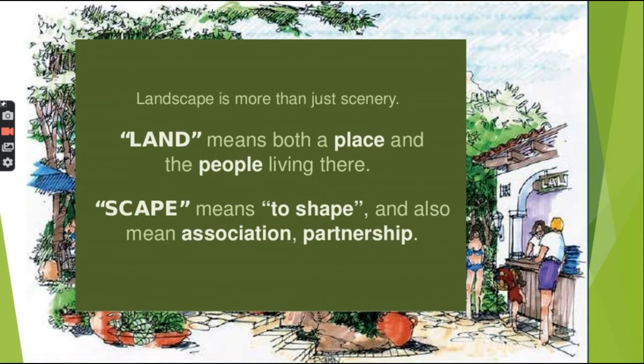An expanse of natural scenery seen by the eye in one view is known as Landscape. That is, Landscape is not more than just a scenery. Land means both a place and the people living there. Also, scape means to shape and also means association and partnership.